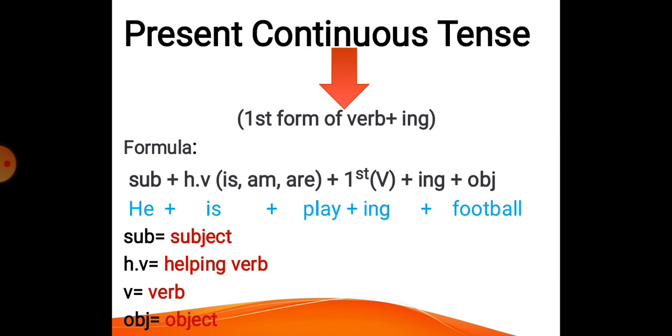Now you have to see at the end, there are some key words which I have used in the formula. They are the abbreviations: sub is equal to subject, h.v stands for helping verb, v stands for verb and obj stands for object. So the formula becomes subject plus helping verbs is, am, are plus first form of verb plus ing plus object.